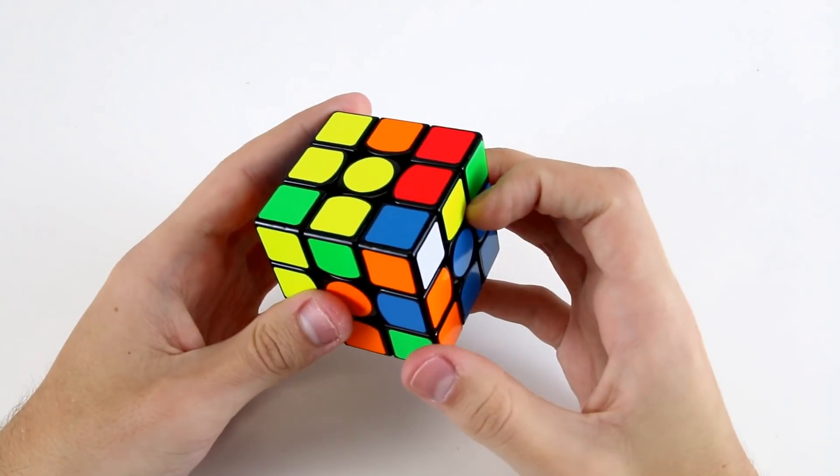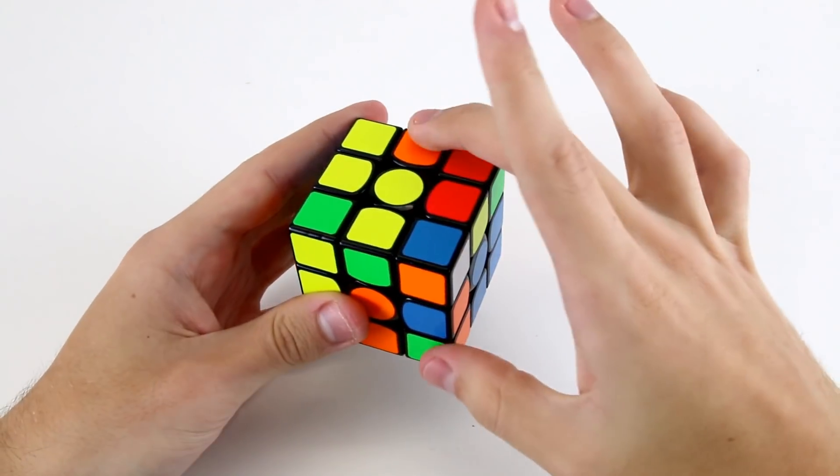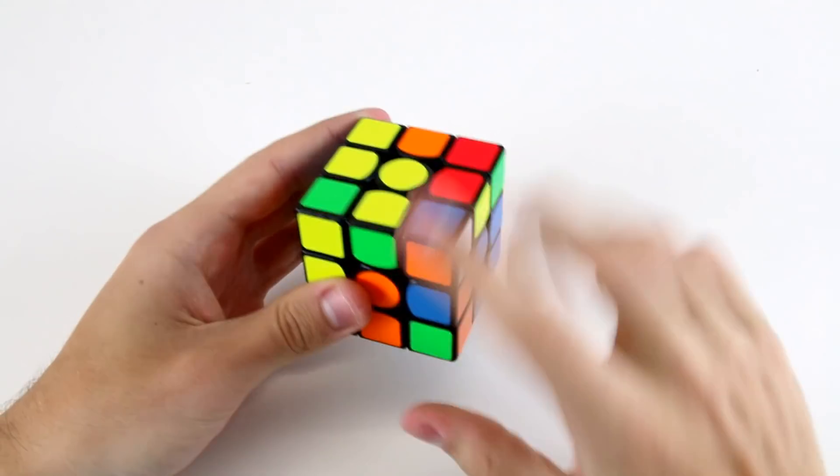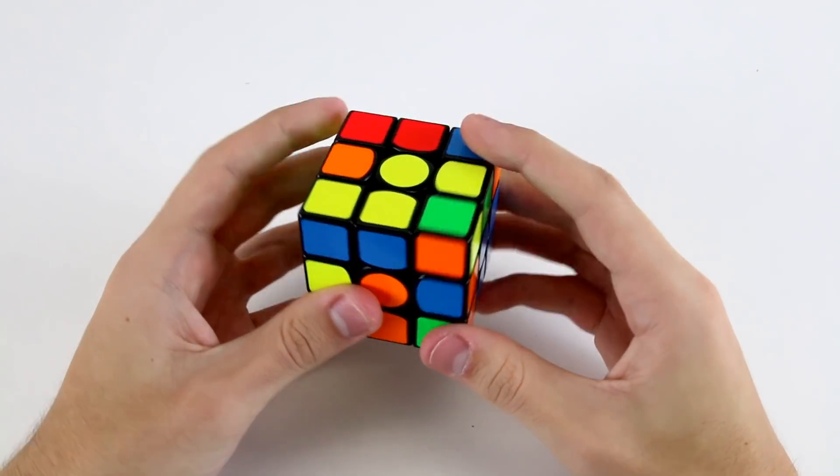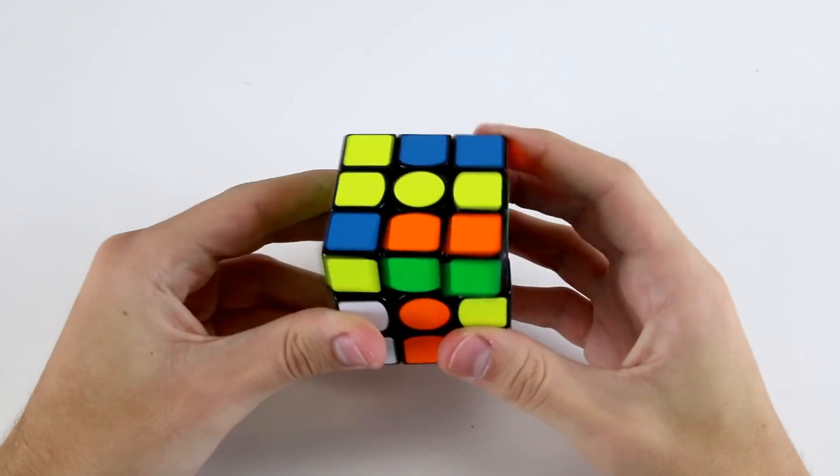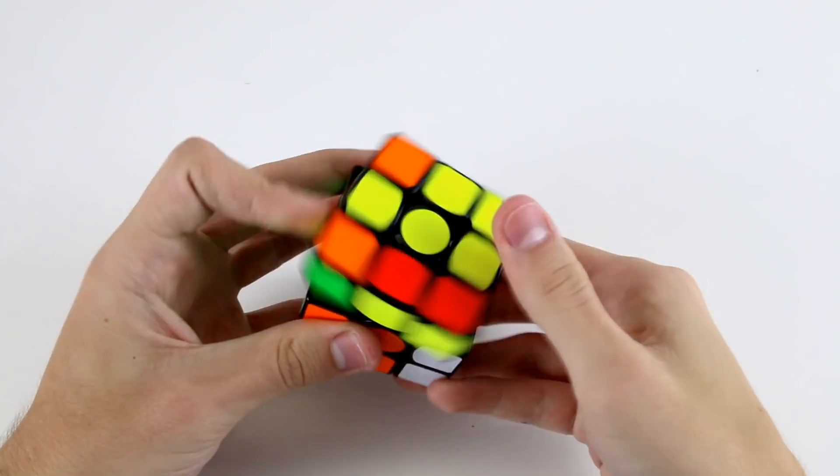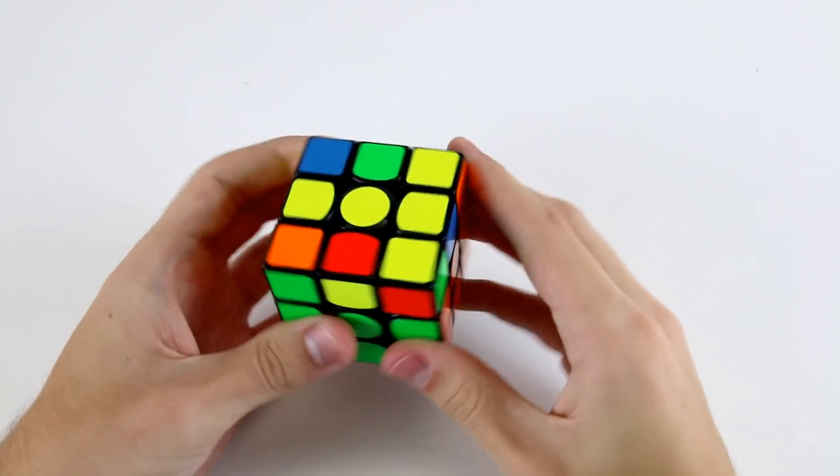Then going over to here there's a few different options. We've got either these two or these two. Doing these two are probably a decent option at the moment. So we can go like that and then solve these two like so.